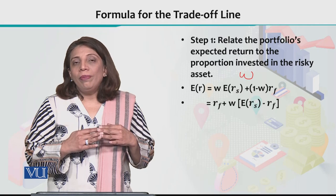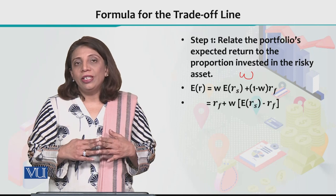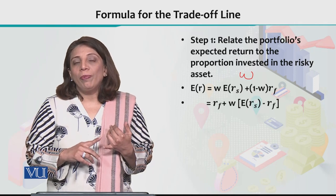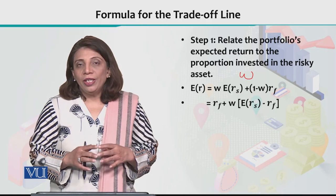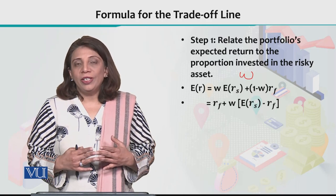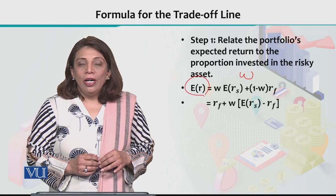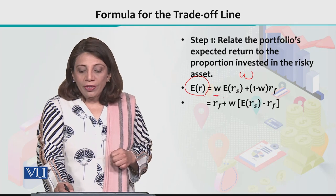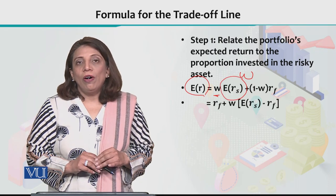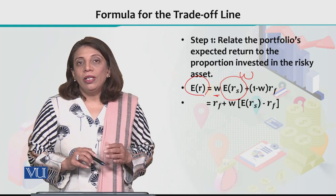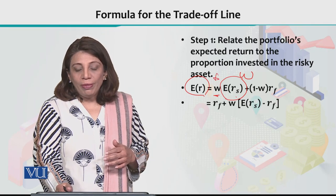To explain this line in equation form and derive it, we need to know the proportion of total investment you want to put in the risky asset and how much in the riskless asset — represented by W and 1 minus W. The expected rate of return is given by ER, which equals the proportion W invested in the risky asset multiplied by ERS, the expected value of the return from the risky asset.